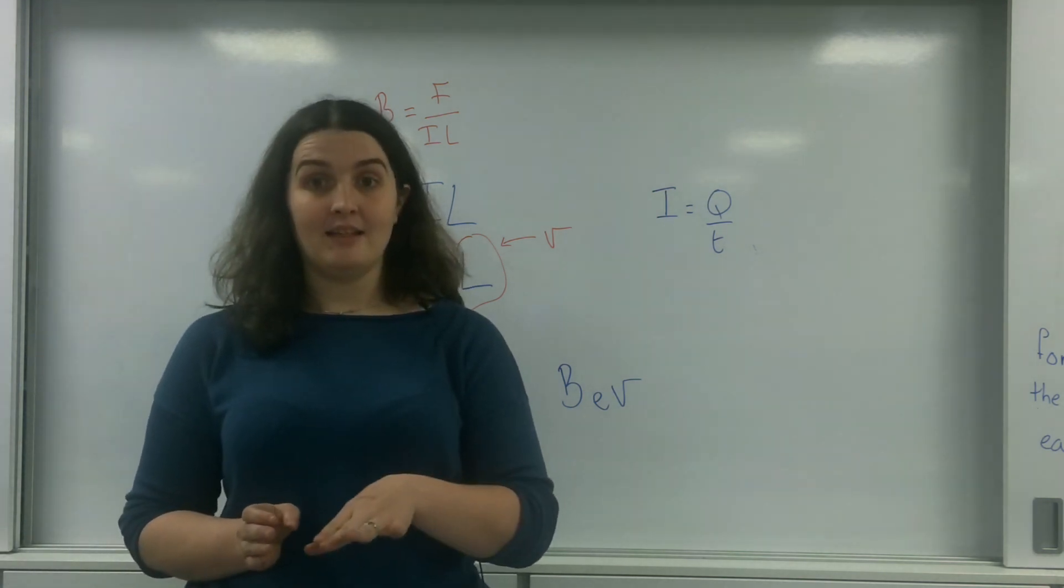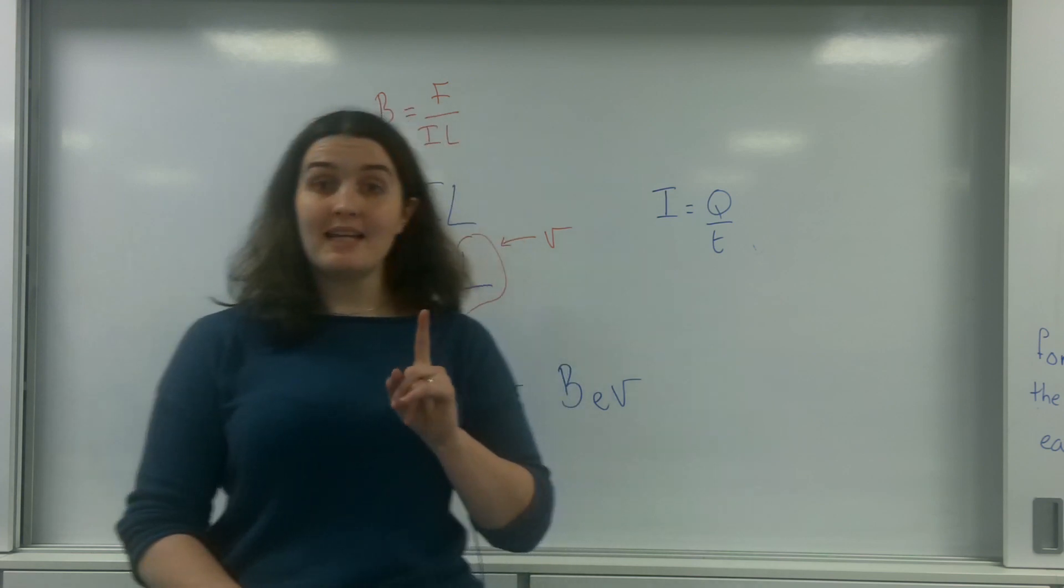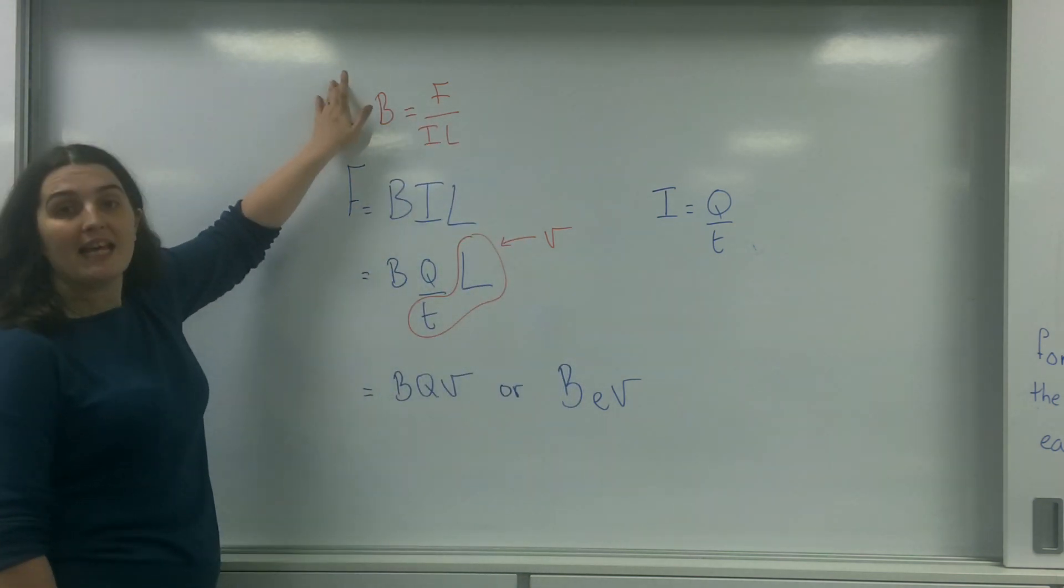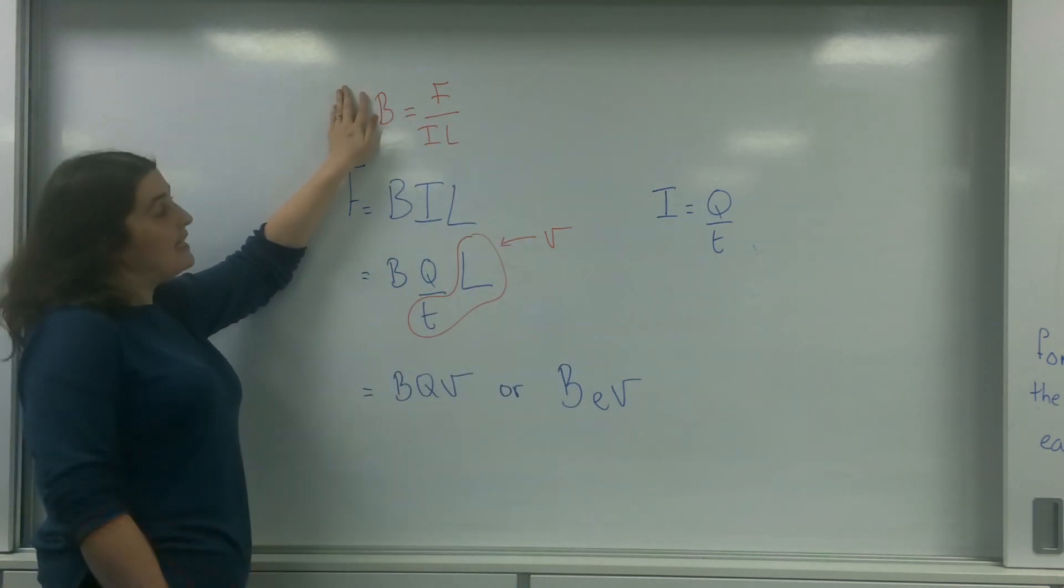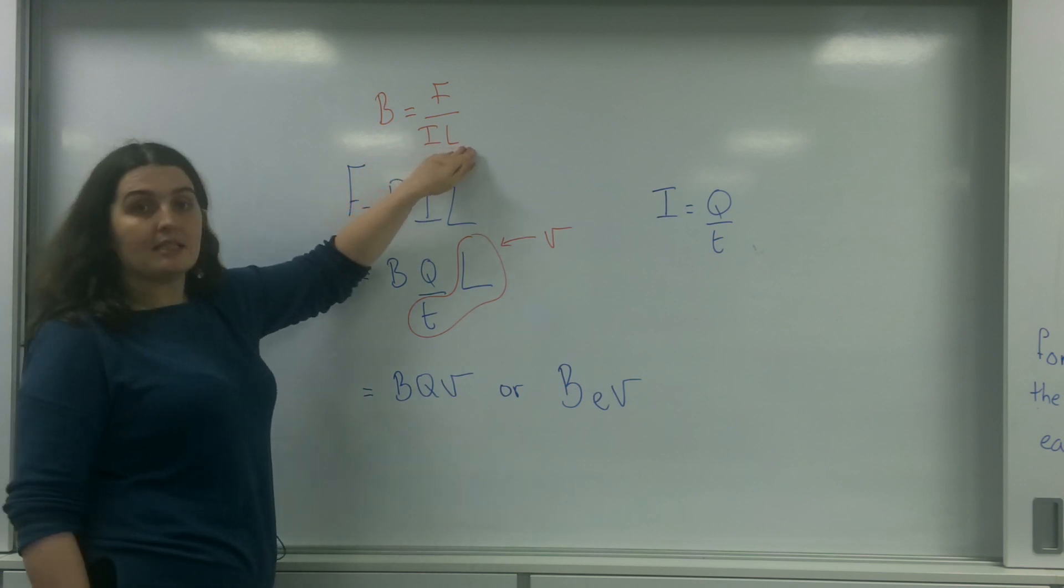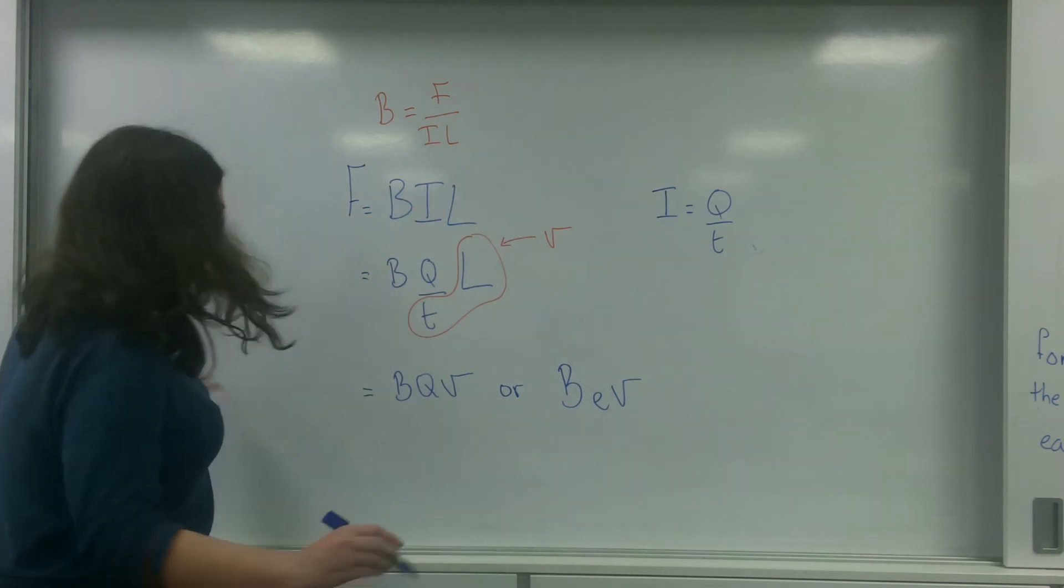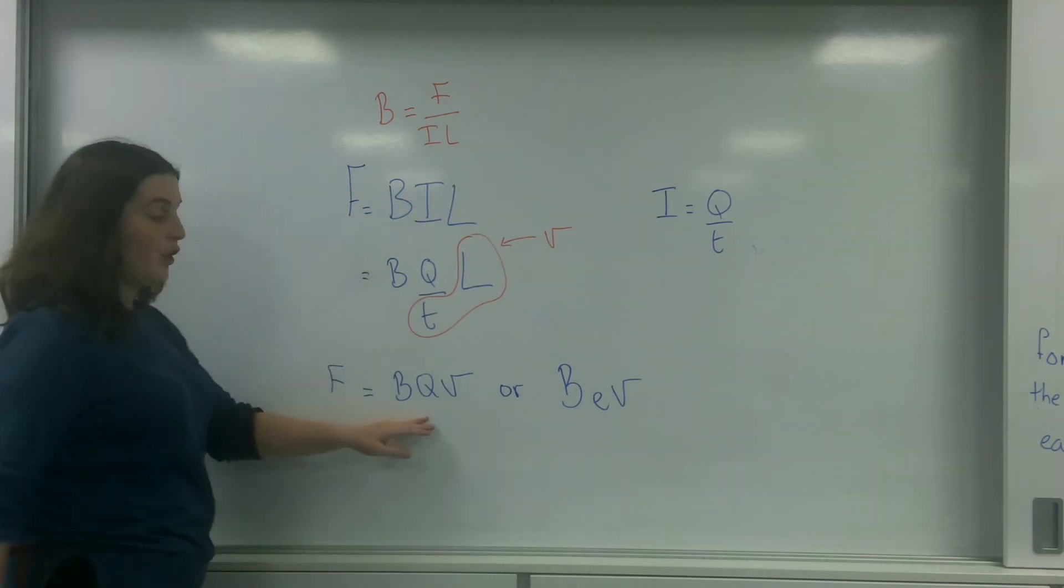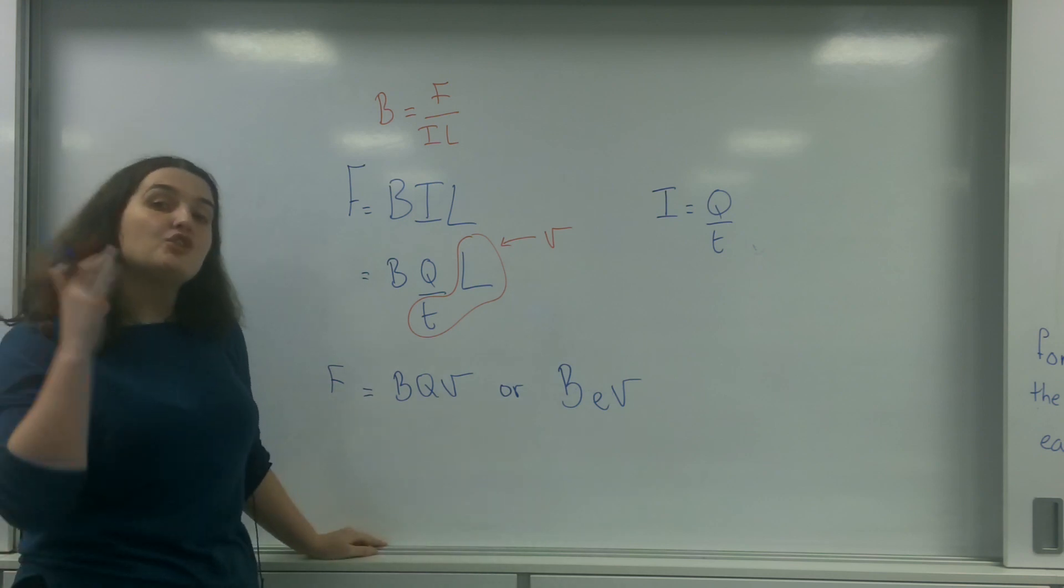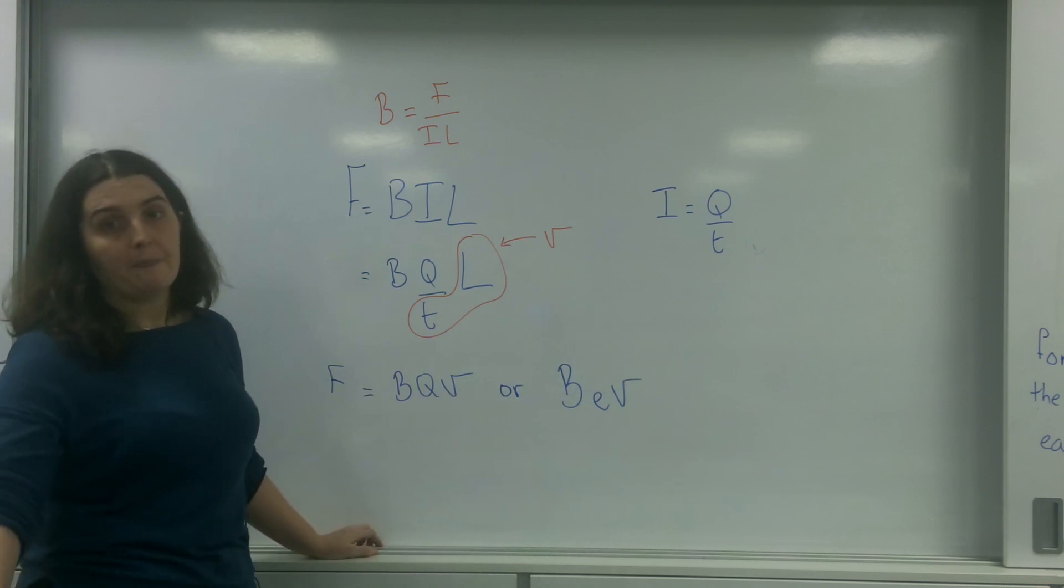However, it isn't. The one that defines magnetic field strength is this one here. And the reason is that current and distance are base SI units, which is more favorable than having force over charge and velocity, which is not a base SI unit.